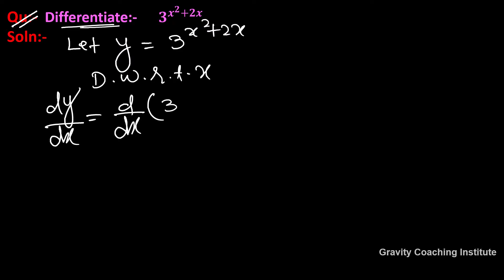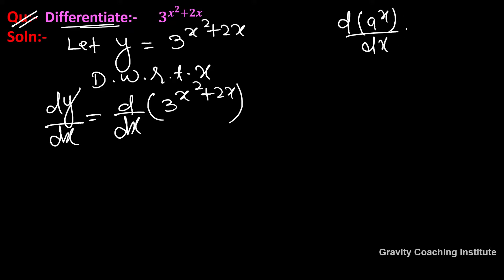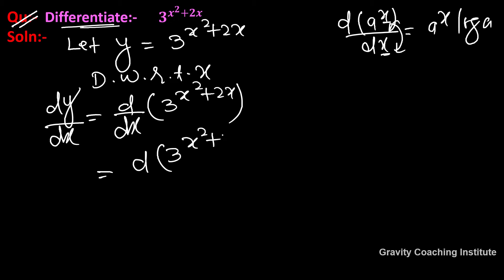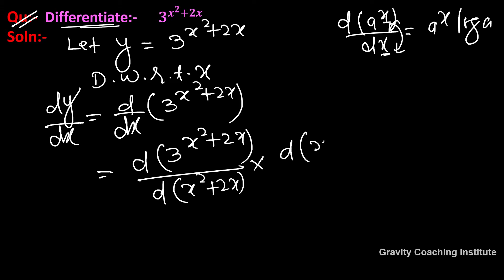The derivative of 3 to the power x squared plus 2x. We can use the formula: derivative of a to the power x equals a to the power x times log a. Here the base is 3 and the exponent is x squared plus 2x, so we apply the chain rule and multiply by the differentiation of x squared plus 2x with respect to x.